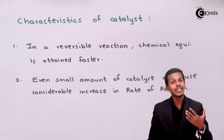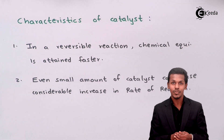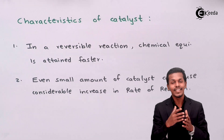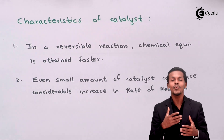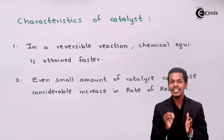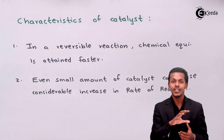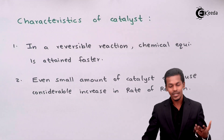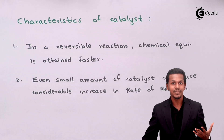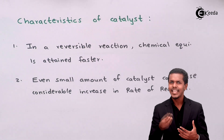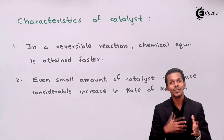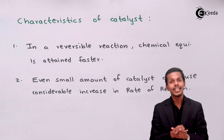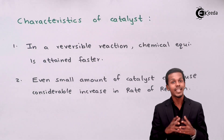When talking about a reversible reaction, what happens when a catalyst is added? Because equilibrium is maintained between the products and the reactants, the rate of the forward reaction and the rate of the backward reaction will both be the same. So the catalyst will not shift the equilibrium, but the equilibrium can be attained much sooner. In a reversible reaction, chemical equilibrium is attained faster by adding a catalyst.